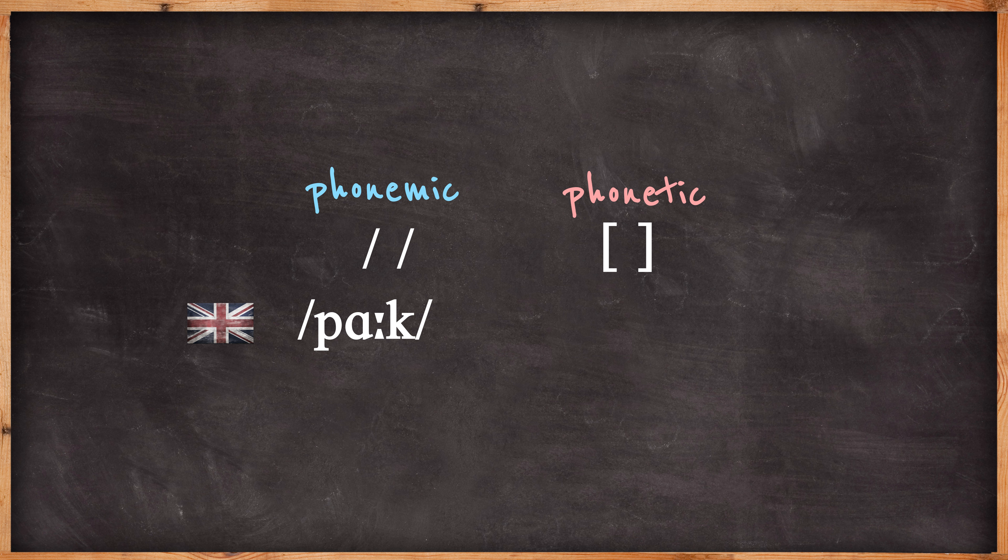P, R, and K. In American it's pronounced park, the R is pronounced so you'll have four sounds: P, R, R, and K.